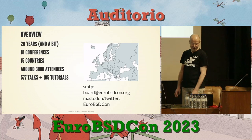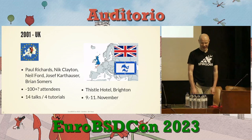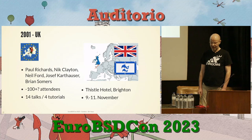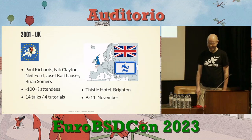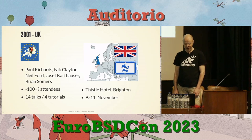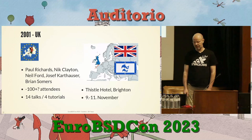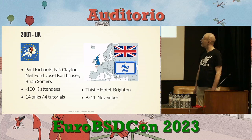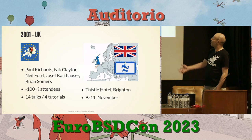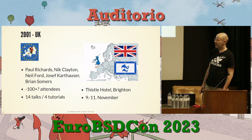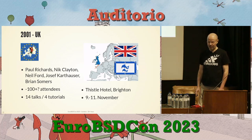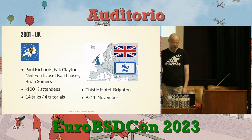So we start with the beginnings. The first BSDCon Europe — that was the name back then — was founded by these lovely people I have never met, at least I think so. I couldn't get the real numbers about attendees, but from looking at the pictures, maybe about 100. Not that many talks and tutorials back then. This was in Brighton, UK. I was always adding the country flag and the flag of the location, city or area. And I have collected all the mascots used over time.